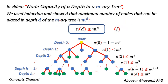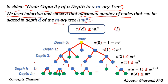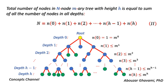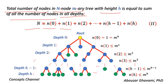In a video published on this channel titled 'Node Capacity of a Depth in an M-ary Tree', we used induction and showed that the maximum number of nodes that can be placed in depth d of the m-ary tree is m to the power of d — in other words, n(d) ≤ m^d. The total number of nodes in an n-node m-ary tree with height h equals the sum of nodes in all depths: n = n(0) + n(1) + n(2) + ... + n(h−1) + n(h).